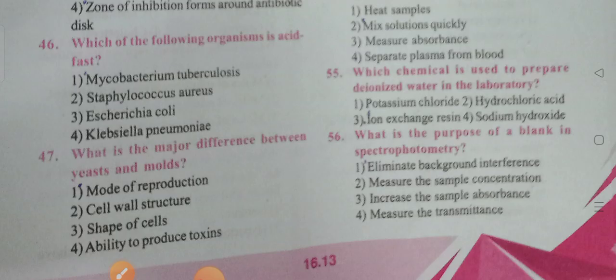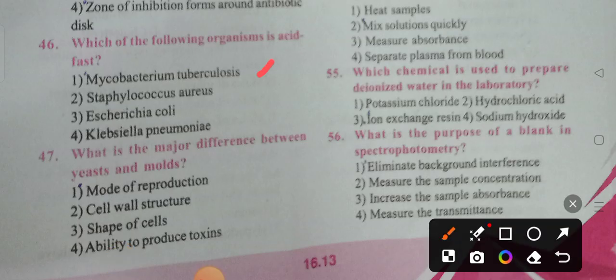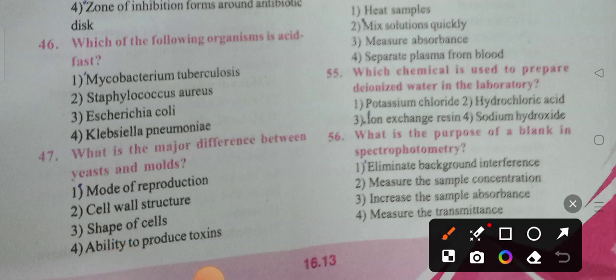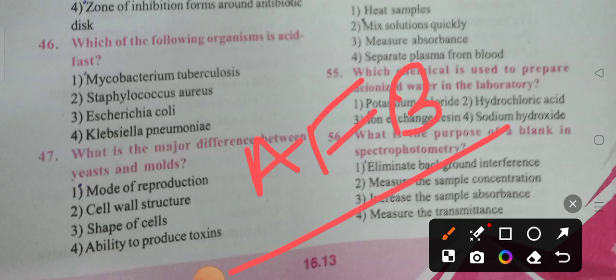Which of the following organisms is acid-fast? Option 1 is the correct answer — Mycobacterium tuberculosis. The acid-fast bacillus test is mainly used to detect TB. Acid-fast bacillus and Mycobacterium tuberculosis — option 1 is the correct answer.